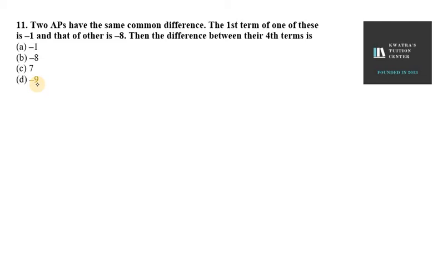So we are given the first term of both APs. A1 of first AP is minus 1, and A1 of second AP is minus 8. Now it asks to find the difference between their fourth terms, and it says their common difference is the same. So whether we have D1 or D2, it will be equal to the same common difference. I will take it as D.